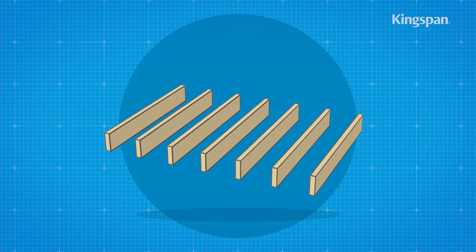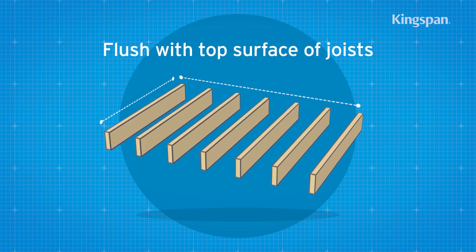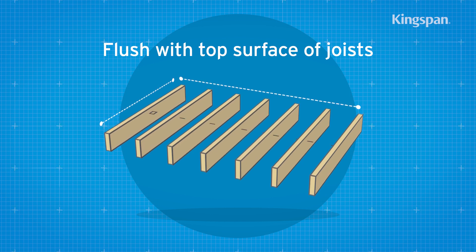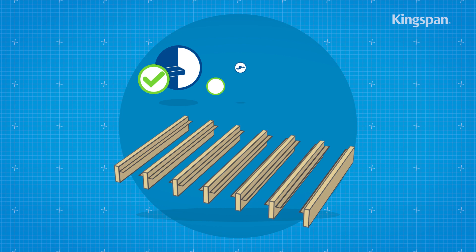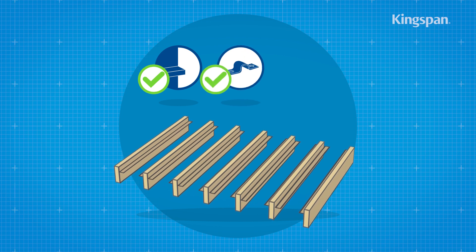In order to ensure insulation boards are flush with the top surface of the joists, they should be supported by treated softwood timber battens, proprietary galvanised steel saddle clips, or galvanised nails.